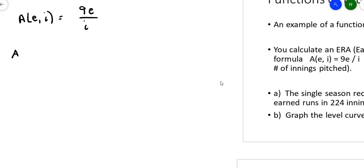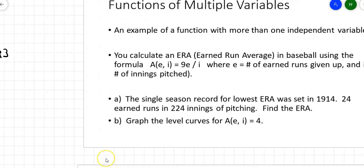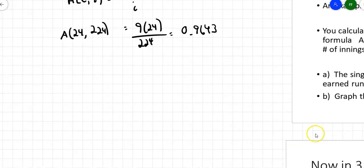My formula is earned run average equals nine times the number of runs you've earned divided by innings pitched. This person got 24 earned runs in 224 innings. I take nine times 24 and divide by 224. I get 0.9643. What that means is in his average game, this pitcher gave up less than one home run in every game, which is pretty spectacular.